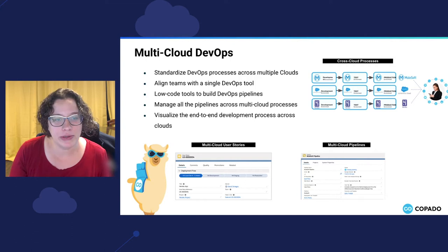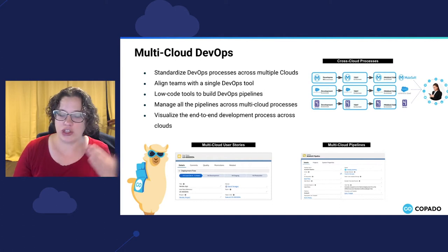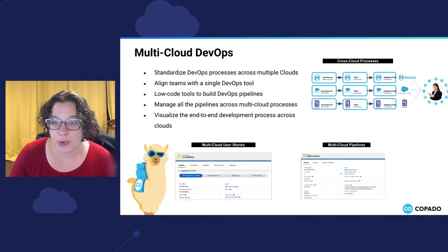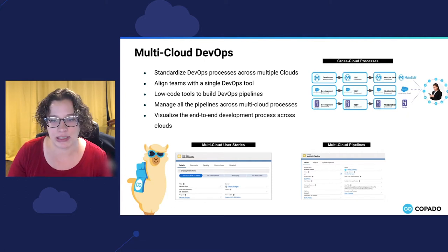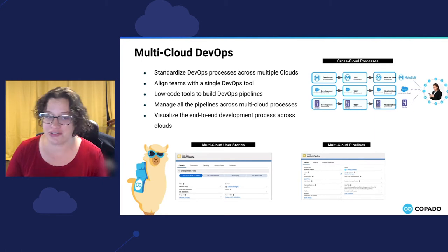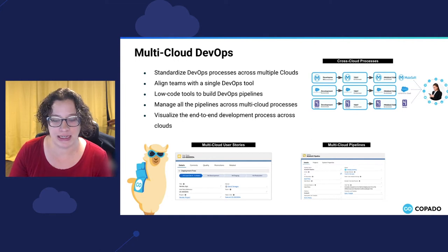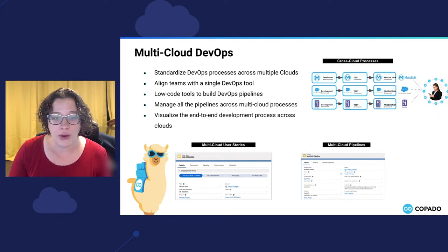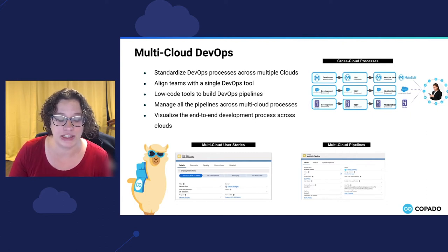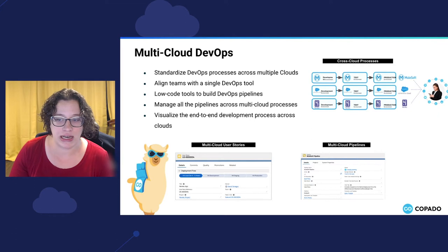Capato is a solution for Salesforce teams, but what we know about Salesforce teams is that Salesforce very often isn't the only technology in their stack. It's quite important for a DevOps solution to be able to accommodate these other technologies across cloud or across SaaS applications, and you really don't want to be managing development across a bunch of different platforms if you don't have to. That's why Capato's ability to extend our CICD and pipeline management capabilities to solutions like MuleSoft and Heroku, while retaining the low-code experience that Salesforce dev teams have come to rely on, is so differentiating. It really gives teams the ability to visualize the end-to-end development process across clouds.